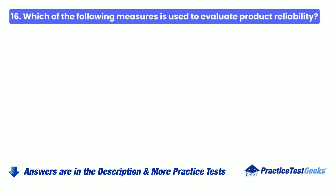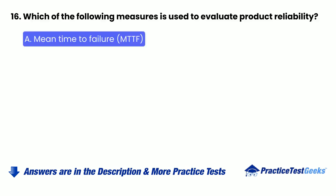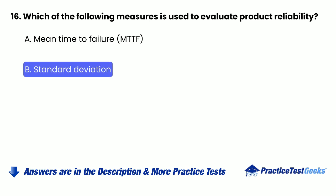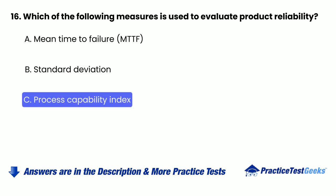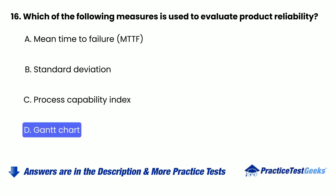16. Which of the following measures is used to evaluate product reliability? a. Mean time to failure (MTTF). b. Standard deviation. c. Process capability index. d. Gantt chart.